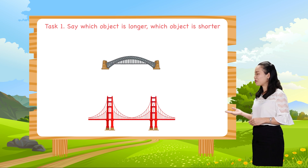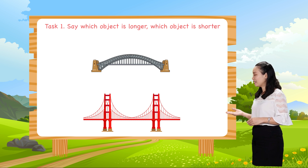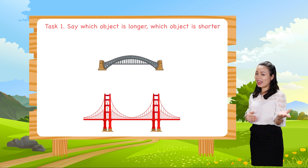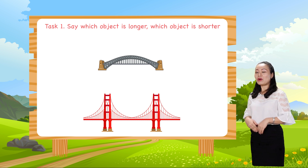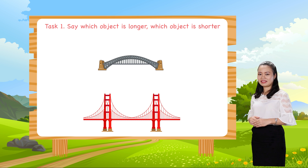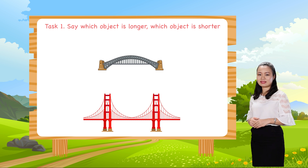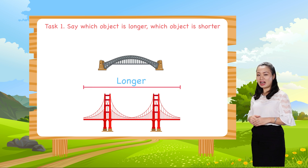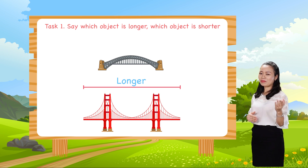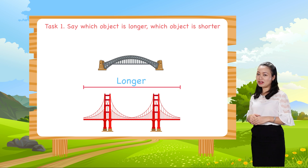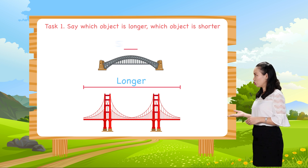Look! This is the Sydney Harbour Bridge and this is the Golden Gate Bridge. Which one is longer? Which one is shorter? Alright! So the Golden Gate Bridge is longer than the Sydney Harbour Bridge, or the Sydney Harbour Bridge is shorter than the Golden Gate Bridge.